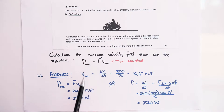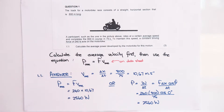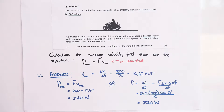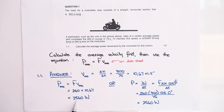They don't give us the average velocity, but we can calculate it because we have the length of the course and the time. It's the change in displacement over change in time: 800 divided by 75 gives us 10.67 m/s. I've written the rounded value but I'll keep the full number on the calculator. Substituting into the equation with the force of 240 newtons gives your answer.